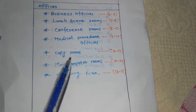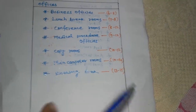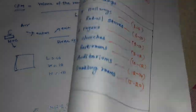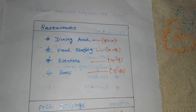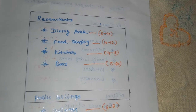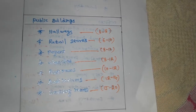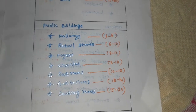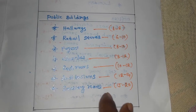The table also covers offices, business offices, lunch break rooms, conference rooms, medical rooms, computer rooms, and smoking areas. For restaurants, dining areas, food storage, kitchens, and bars, almost 15 to 20 air changes per hour are required. Public buildings such as retail stores, foyers, restrooms, and auditoriums are also included. This is a standard table available in all HVAC systems.